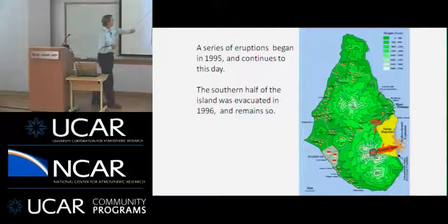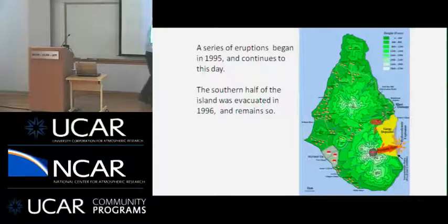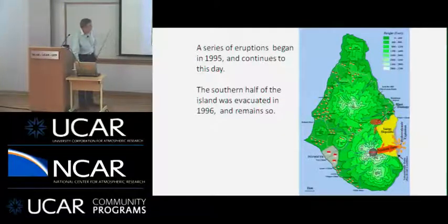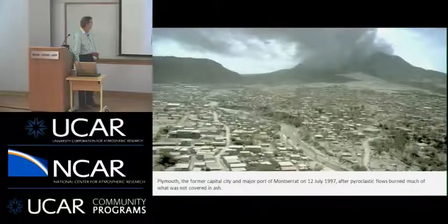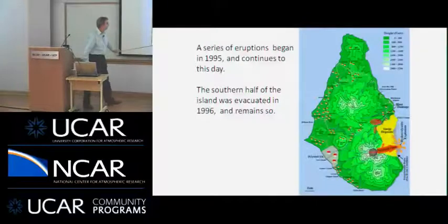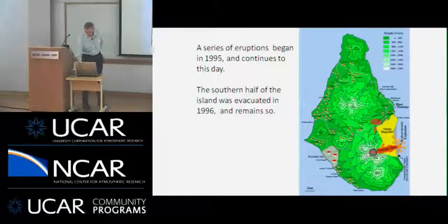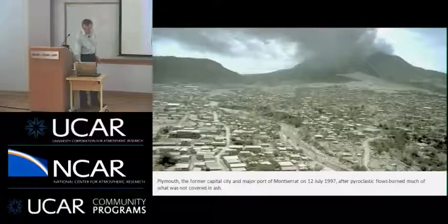A series of these eruptions began 20 years ago and it continues now. As a result, the southern half of the island is inaccessible, although the locals are complaining that the number of eruptions has decreased and they're claiming they should be allowed back in. But it's actually a very dangerous volcano because it emits a lot of sulfur. This is the capital city of Montserrat, which is down here, and in 1997 it all got covered with ash and it's not particularly habitable these days.